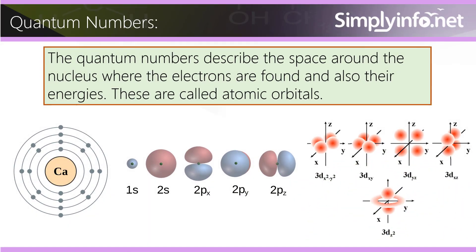Quantum numbers describe the space around the nucleus where the electrons are found and also their energies. These are called atomic orbitals.